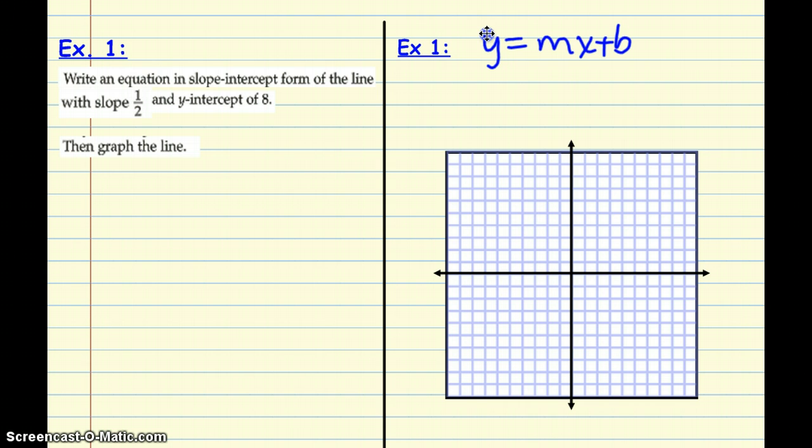In this case, both the slope and the y-intercept are given. So, we'll keep our y, our slope is 1 half, keep our x, and the y-intercept is a positive 8, so we say plus 8. So, from here, we're going to graph it.